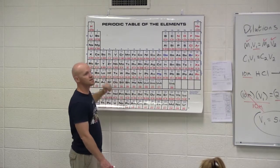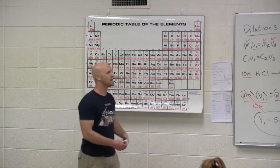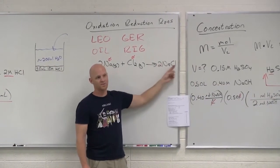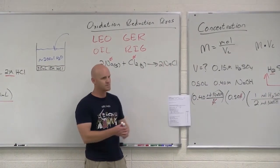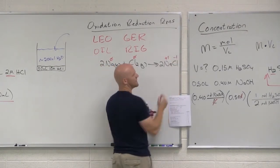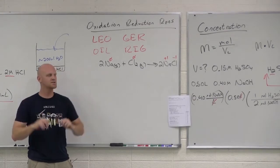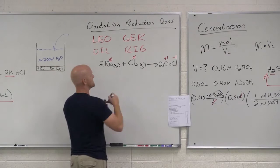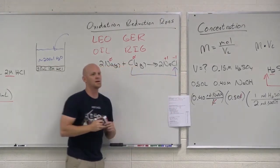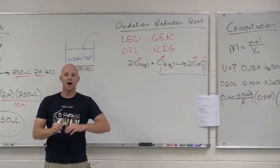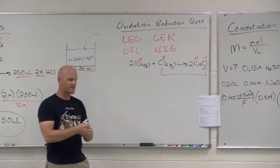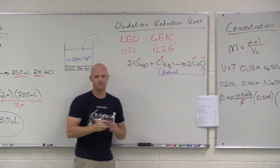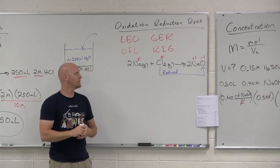Transition metals take on variable charges you can't predict — you have to look at context. In the sodium-chloride example, we have two monatomic ions. Sodium is plus one; chloride is negative one. Chlorine went from zero to minus one, so its oxidation state went down — that's why we call it reduced. Cl₂ got reduced; it is the reactant that is getting reduced.